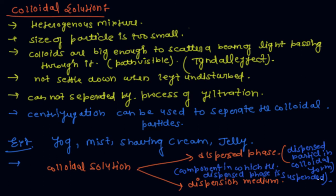In fog, the dispersed phase is liquid and the dispersion medium is gas. In the case of shaving cream, the dispersed phase is gas and the dispersion medium is liquid. In the case of jelly, the dispersed phase is liquid and the dispersion medium is solid. I hope you understand what is a colloidal solution and what is suspension. Please download the Scorer Learning app. Thanks for watching this video.